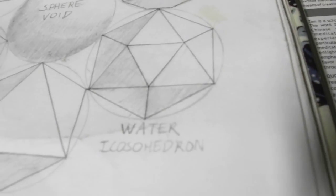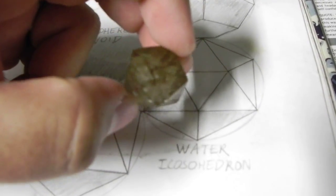The next one is the water, which is the icosahedron. This one. This represents water.